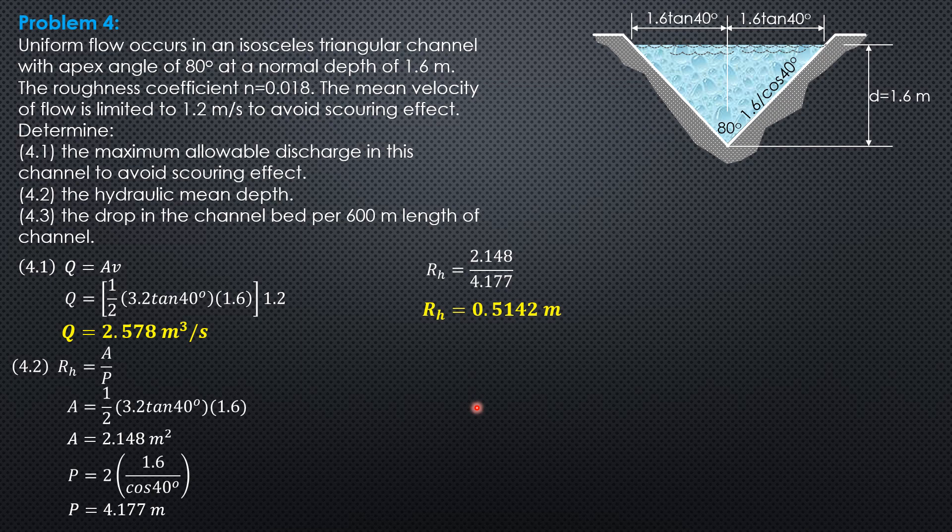Then finally, the drop in the channel bed per 600 meters length of channel. Since the flow is uniform, the drop in channel bed is also the drop in the energy grade line. In other words, that's the head loss. So we need to solve for the slope.